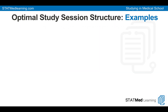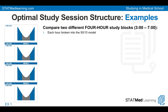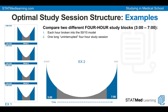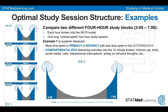Here are some examples — let's compare two different four-hour study blocks. Over here we have four hours staggered into the 50-10 model, and down here we just have one long uninterrupted four-hour study marathon. Example one is superior because we spend more time in primacy and recency, less time in the intermediate — but more importantly, it compartmentalizes those distracting activities into the 10-minute breaks. That's where all your internet use, texts, social media, calls, interpersonal interruptions, intrusive thoughts — it can all happen, compartmentalized. And you always have something to work toward as you go through your 50 minutes.